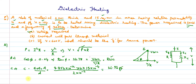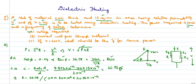Now substituting into tan φ = R·ω·C to find R: R = tan φ / (ω·C) = 24.78 / (2π × 30×10⁶ × 26.56×10⁻¹²). The 10⁻⁶ terms partially cancel, giving resistance R ≈ 4992 ohms.